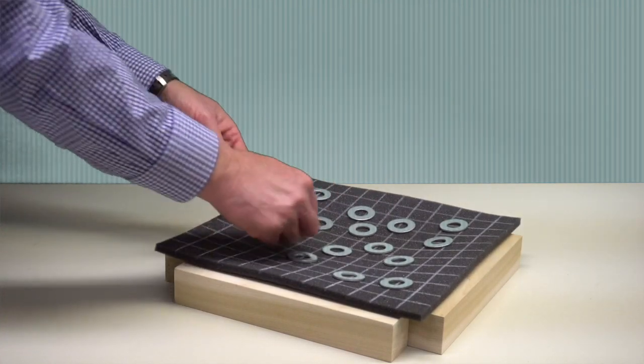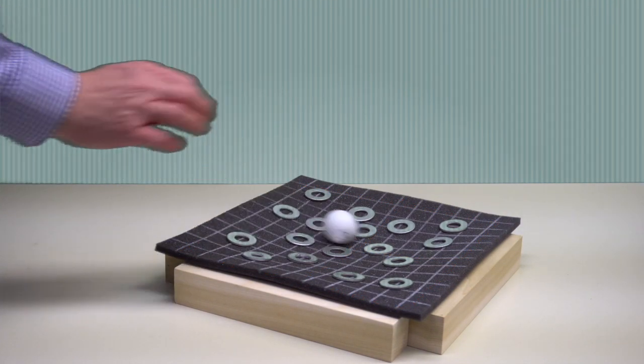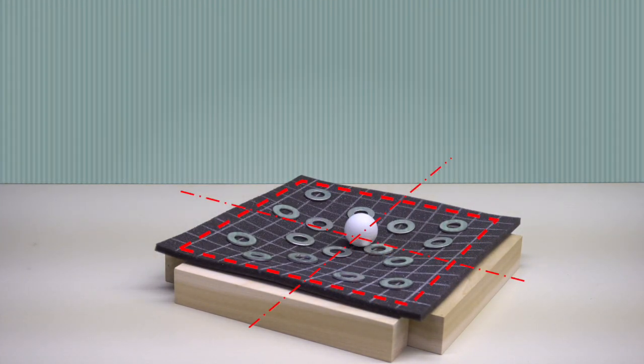As you can see, the curvature is positive, like a smile, everywhere and in both directions. You can also see that the maximum deflection occurs at the center of the plate.